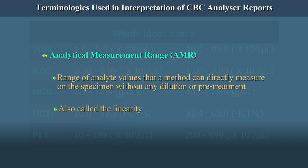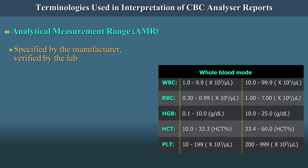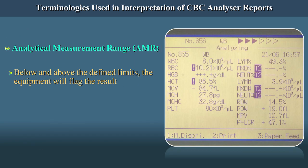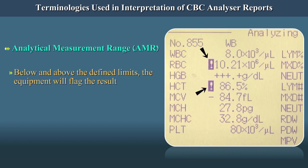This range is also called the linearity and is specified by the manufacturer but needs to be verified by the lab. This range is fed in the machine by the manufacturer. Every equipment has an analytical measurement range which is the linearity limit for the analyte with possible errors at varying levels. The upper and the lower limits will be specific. Below and above the defined limits, the equipment will flag the result.